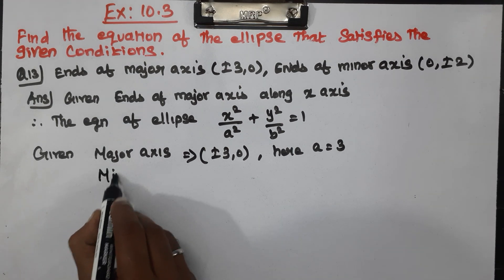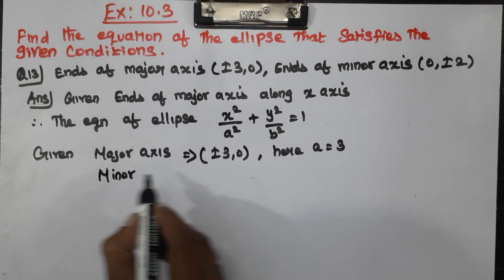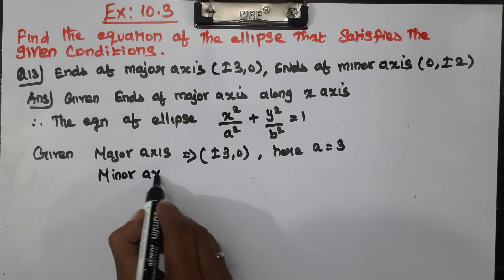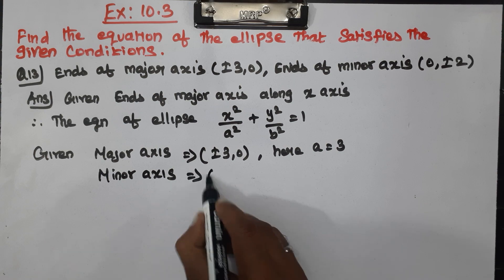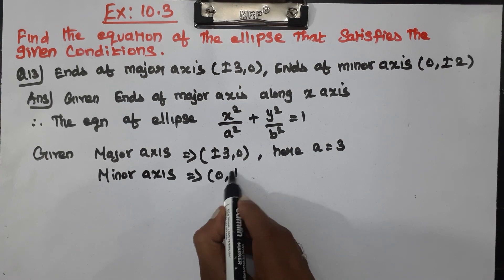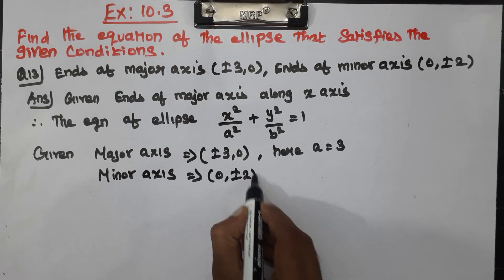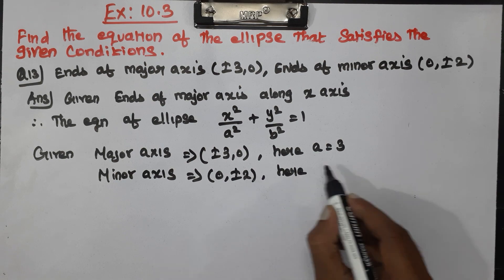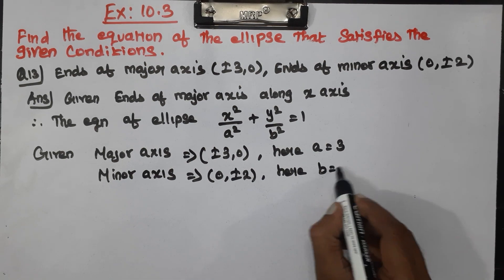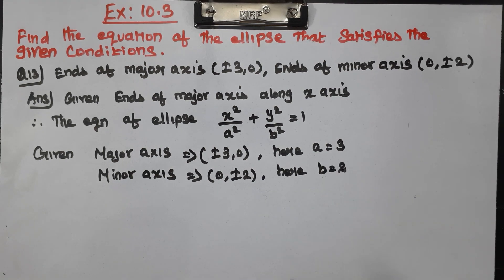Given: the minor axis is at 0, plus or minus 2. So here, B is equal to 2.